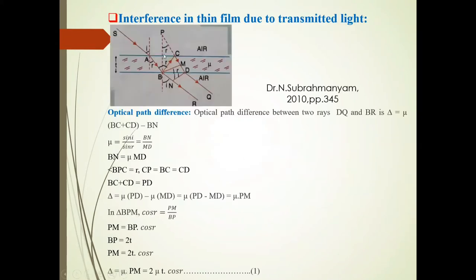In this diagram, a film of thickness T is shown. The refractive index of this medium is μ. Here is air medium, and on this side also air medium. A ray of monochromatic light is incident.